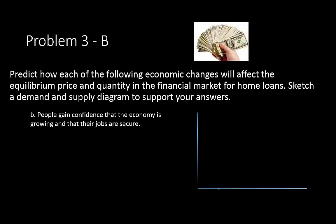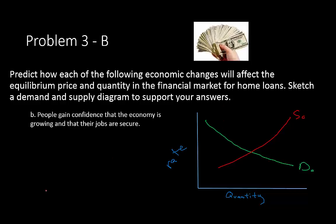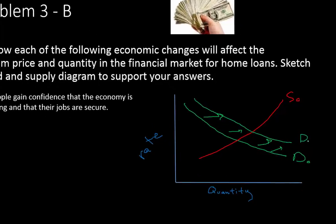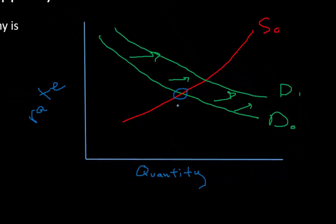For problem 3b, people gain confidence that the economy is growing and their jobs are secure. In a confident economy there is more borrowing, so demand for money in the financial market increases and shifts right to D1. The new equilibrium E1 shows the rate increasing and quantity also increasing.